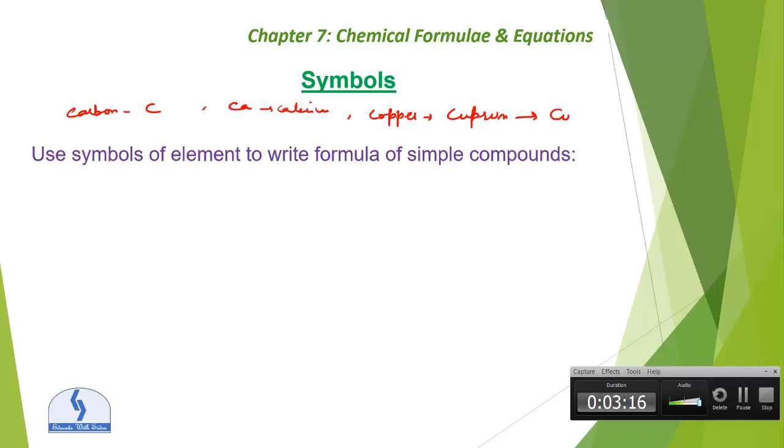Okay, now use symbols of elements to write the formula of a simple compound. For example, sodium chloride. What is the symbol of sodium? Yes, sodium has a symbol of Na. And what is the symbol of chloride? We are taking chloride because chlorine is bonded with sodium, that is why it is chloride. So the symbol of chloride will be the same as chlorine, that is Cl.